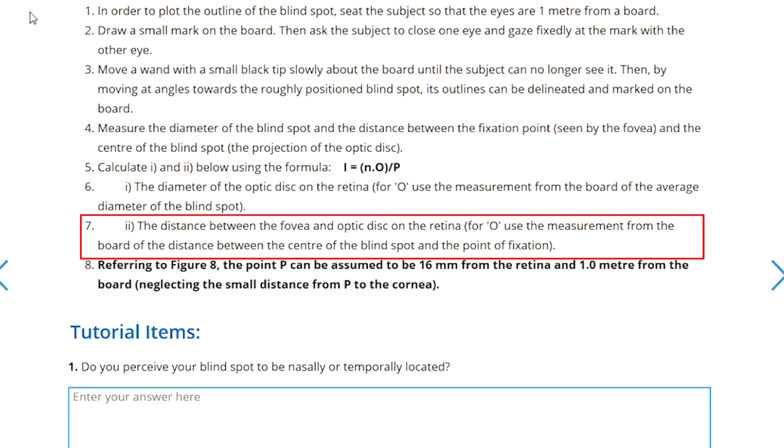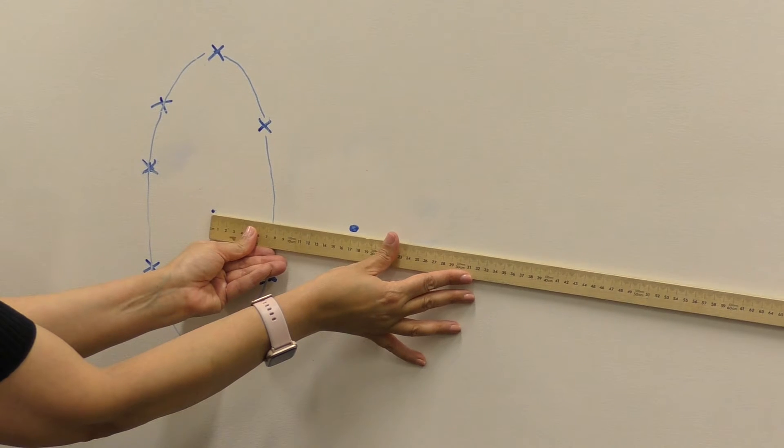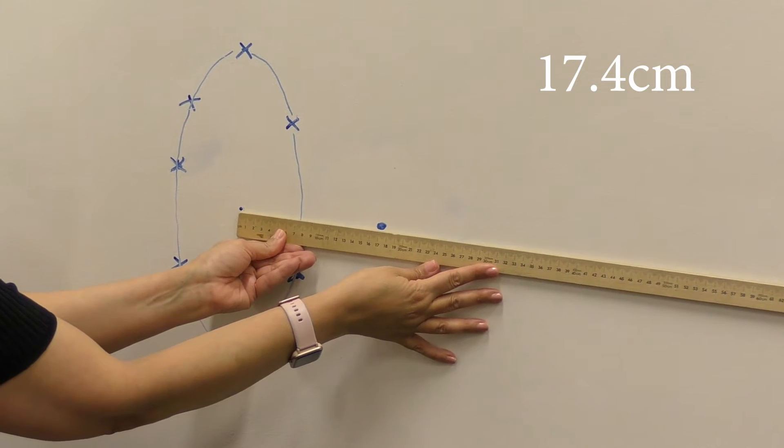Lastly, your notes also ask you to measure the distance between the center of the blind spot and the point that you were fixating on, and the value we got for that was 17.4 centimeters.